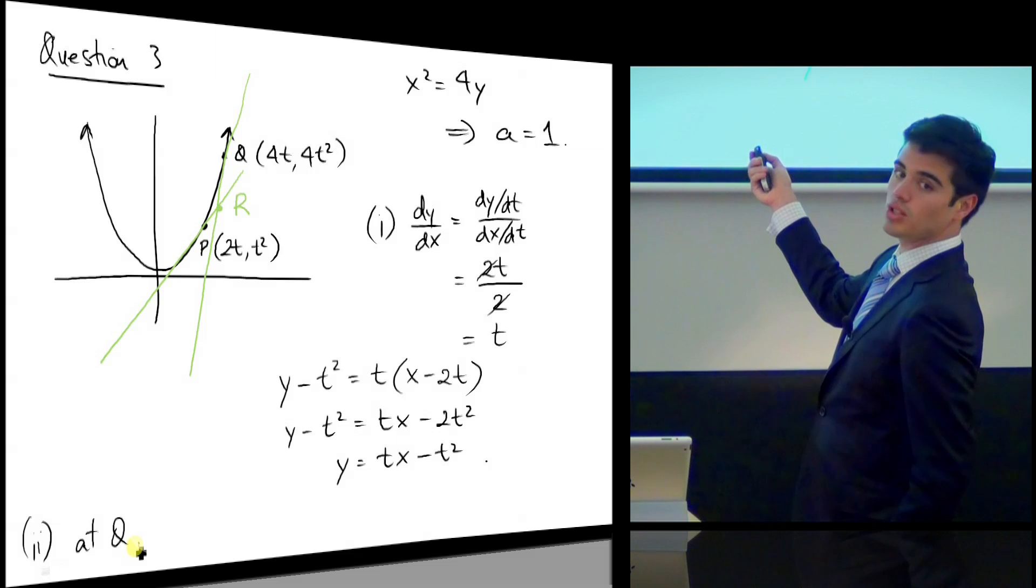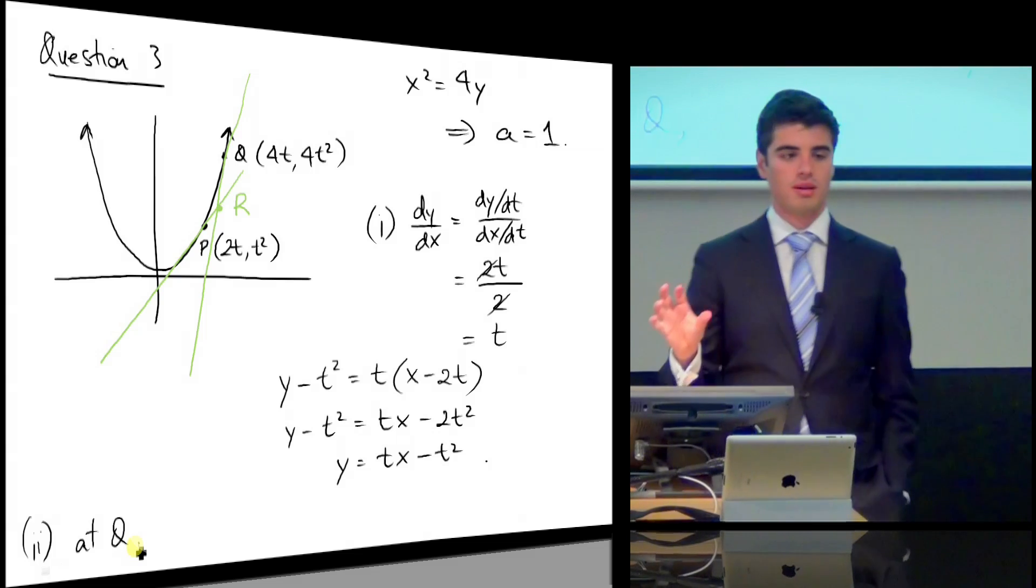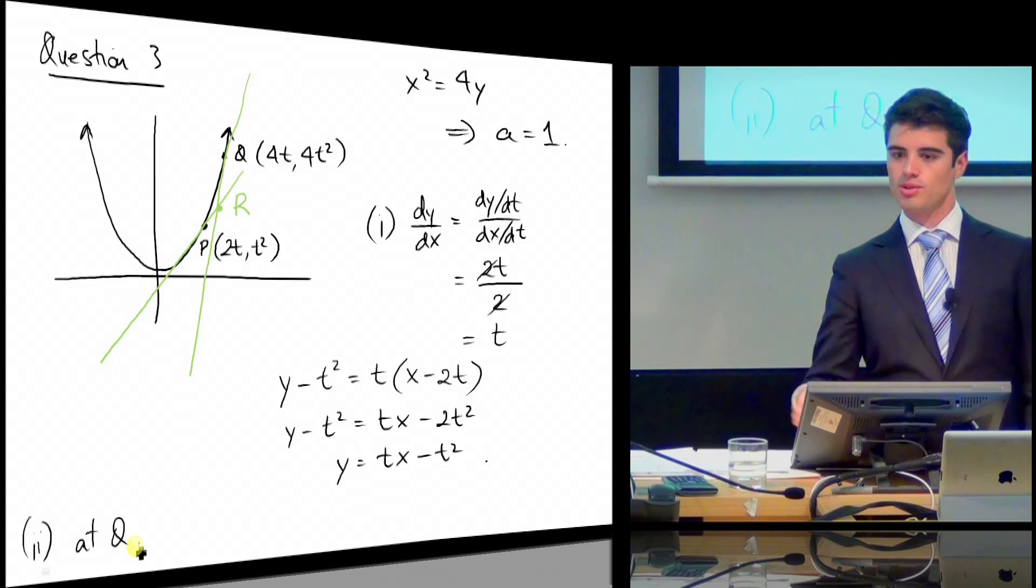If I replace a t with a 2t here, I also square it, I end up with 4t squared. So by moving from p to q, what I'm doing is I'm replacing every t with a 2t.